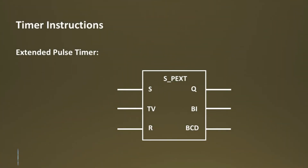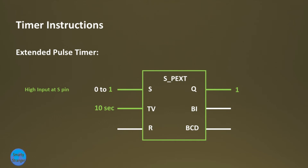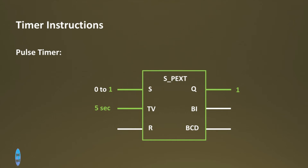Our second timer is the Extended Pulse timer, which is slightly different from the Pulse timer. When S input detects a change of signal from 0 to 1, the timer starts its timing and output Q is energized until time elapses. If the signal on S changes from 1 to 0 before time elapses, the timer does not stop until its timing is complete and output also remains 1. If S changes from 0 to 1 again before time elapses, the timer restarts its timing from the set value and output remains 1. If there is a high signal on R input while the timer is running, the timer and output stop immediately.